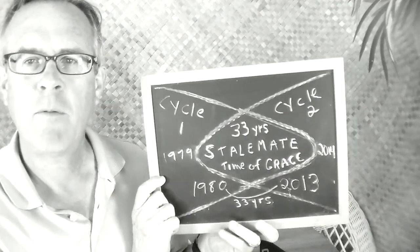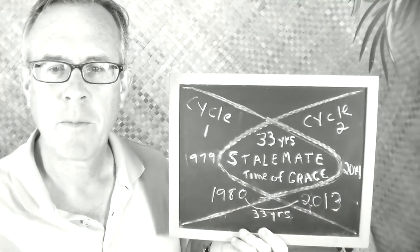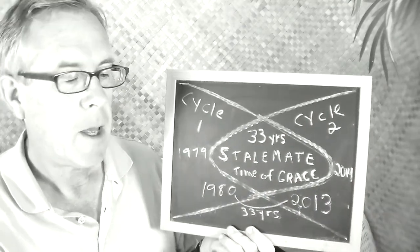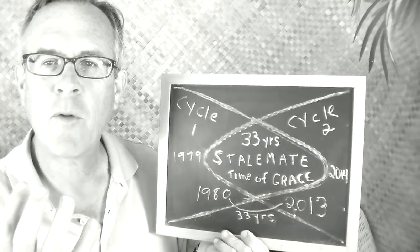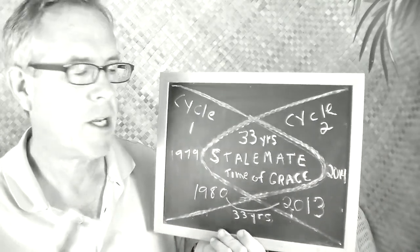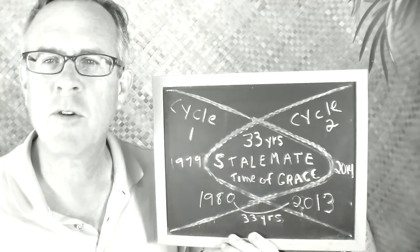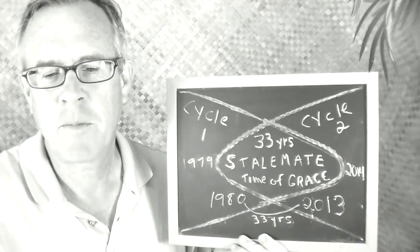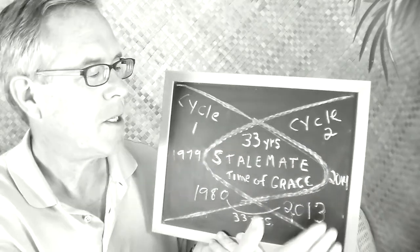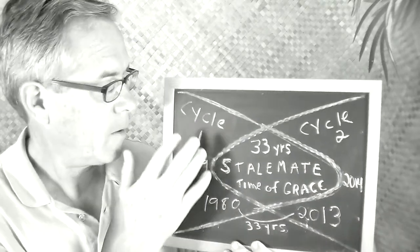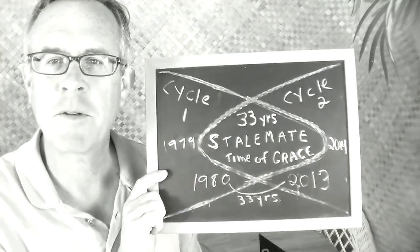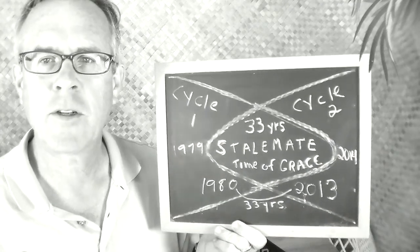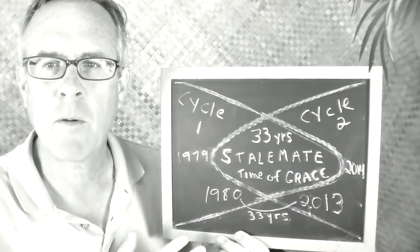During this time we have what is called a stalemate — where the ways of the old cycle one and the ways of cycle two are both present and clashing. At first, cycle two comes in and we say, 'What is all this new stuff? It's kind of interesting, but we'll see how it works out.' Gradually cycle two gains prominence, and then cycle one is saying, 'Wait a minute — it seems like we're being kicked to the curb here.' There's a lot of angst because the ways of cycle one are being replaced.